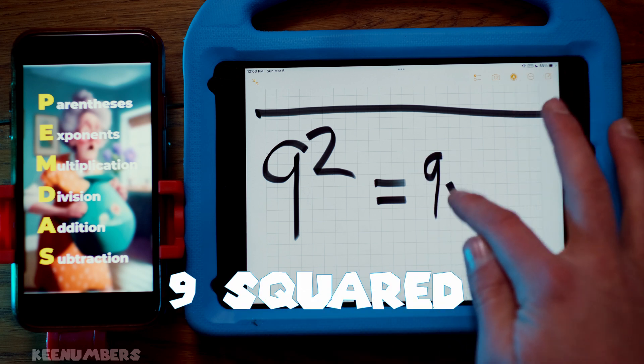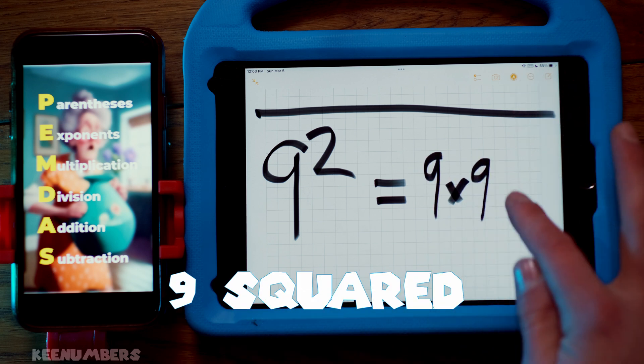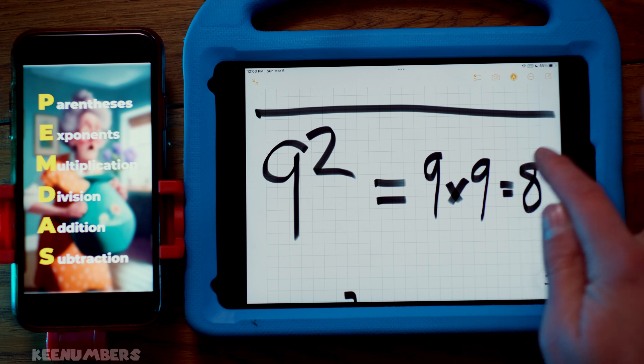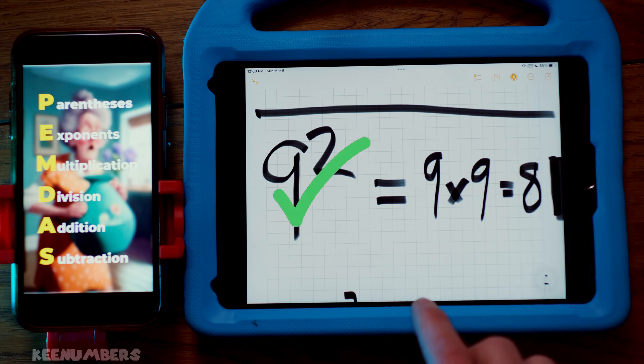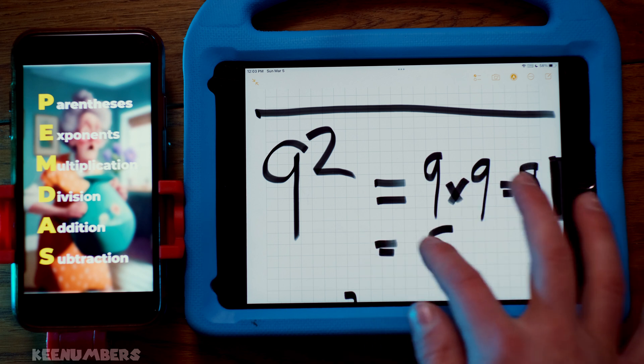9 squared is the same thing as 9 by 9. And you know how to do that. Get your Legos out. That's 81. 9 by 9 is 81. Wow, that was sloppy. 81. There you go.